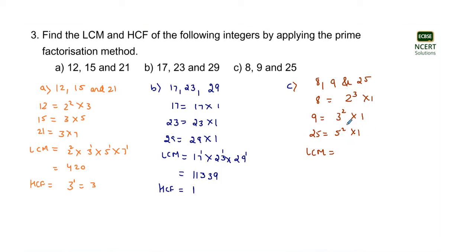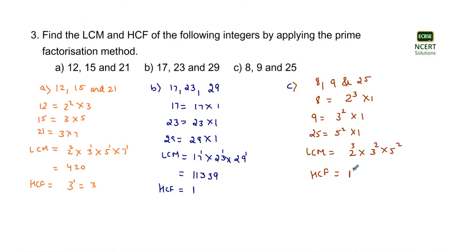For the LCM, it is the product of the unique prime factors of 8, 9, and 25. The unique prime factors are 2, 3, and 5 raised to their maximum powers of 3, 2, and 2 respectively. For the HCF, the only prime factor common in all three numbers is 1, raised to its minimum power, so the HCF equals 1.